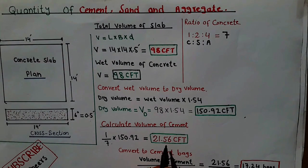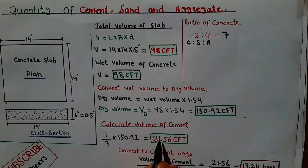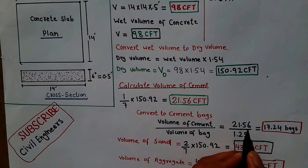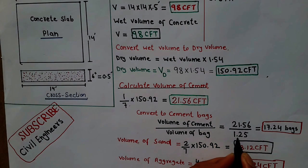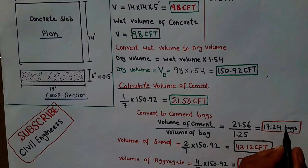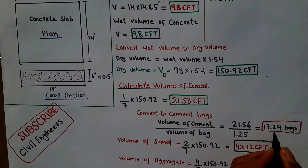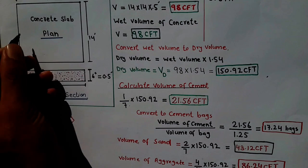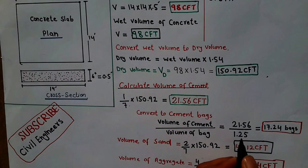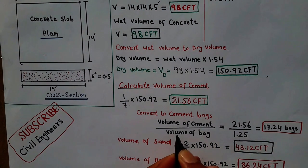Now I want to convert this cement volume into bags. Number of bags = volume of cement ÷ volume of one bag. Volume of cement is 21.56 CFT, and volume of one bag is 1.25 CFT. So 21.56 ÷ 1.25 = 17.24 bags. We can say bring approximately 18 bags for this slab. Note that one bag volume is 1.25 CFT and the weight of one bag is 50 kg.